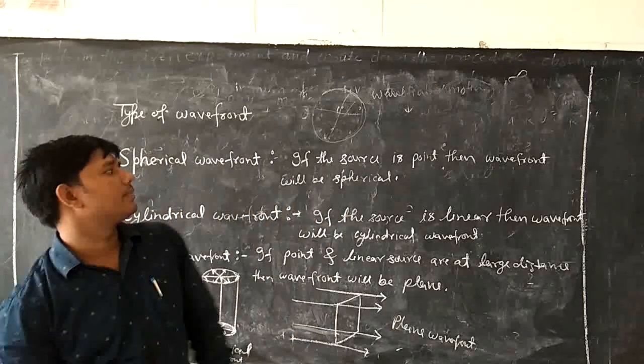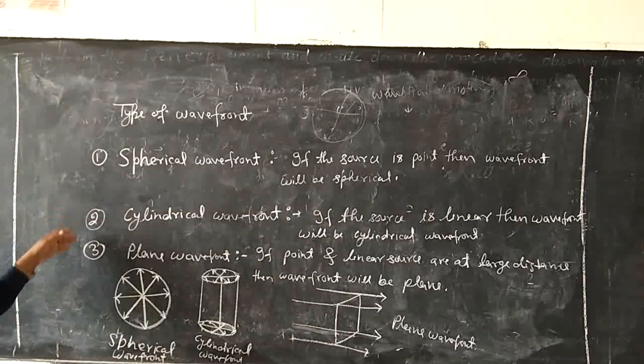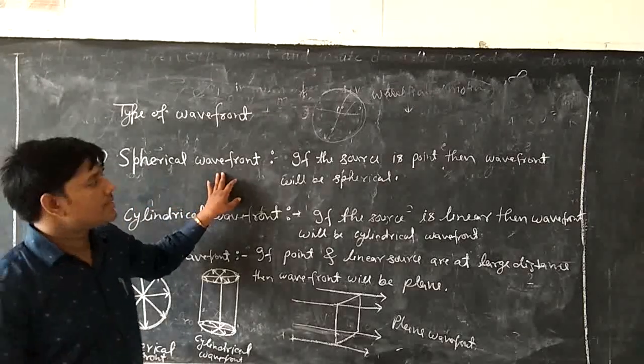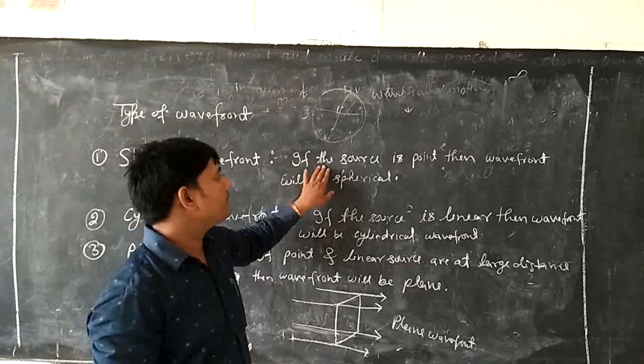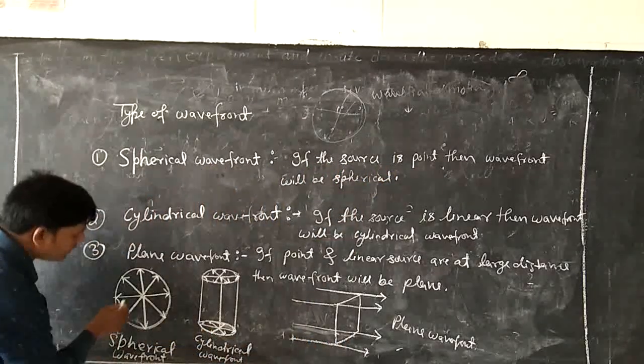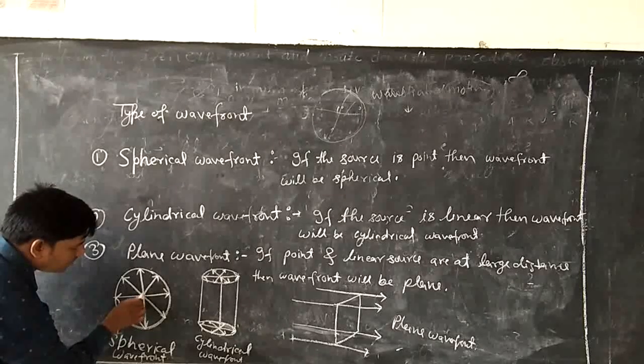What are the types of wavefront? There are three types of wavefront. First, spherical wavefront. Spherical wavefront means if the source is a point. This is the source, this is the point source.